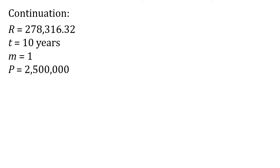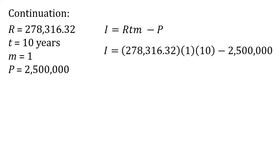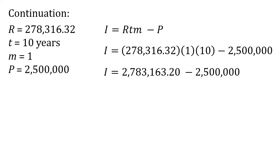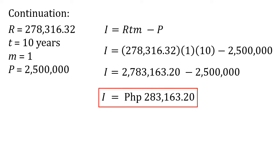To solve for the amount of interest, substitute the obtained values. The formula is: I equals R times t times m minus P. So I equals 278,316.32 times 1 times 10 minus 2.5 million, which gives I equals 2,783,163.20 minus 2,500,000. The difference is 283,163.20. This means the amount of interest is 283,163 pesos and 20 centavos.